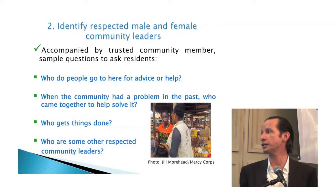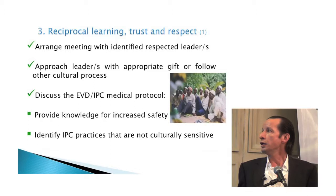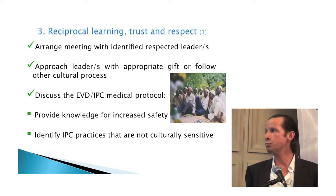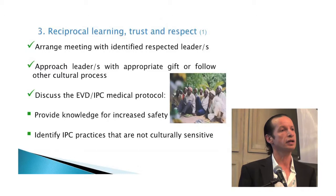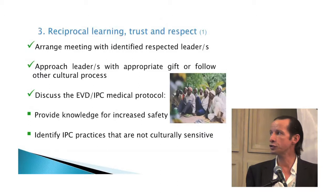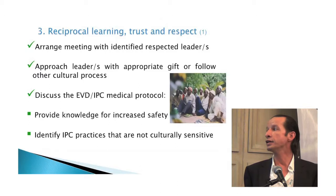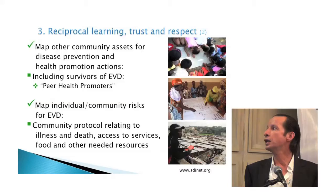There are layers and layers of different respected and trusted people — we tend to go only with NGOs or certain leaders, but it's important to keep the full range in consideration. Step three: reciprocal learning, trust, and respect. Arrange a meeting with the identified leaders, and go with an appropriate gift — community members will tell you what it is, maybe food or a bag of rice, or there's a cultural process to follow. Then discuss the medical protocol: explain why we have to do certain things, to provide them with knowledge for their own safety, prevention, and action.